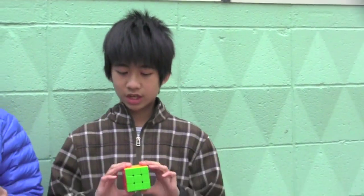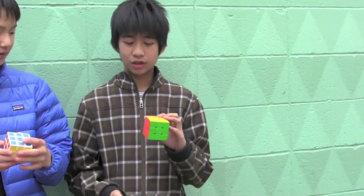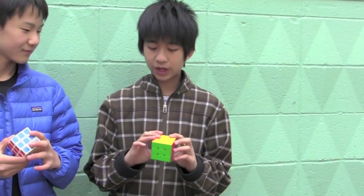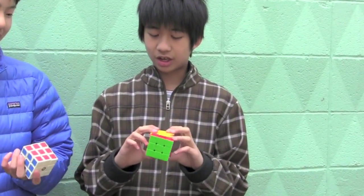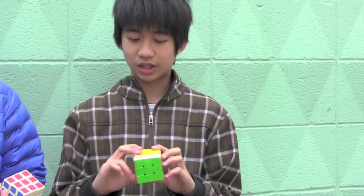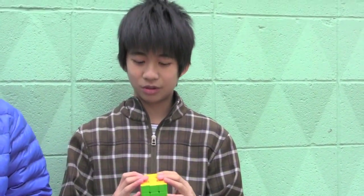If you ever see F or B, it means front and back. So this is the front face, the face which is in front of you, the back face which is in the back. F means you turn the front face clockwise, F prime means counterclockwise, and F2 is you turn it twice. Same applies to the back.